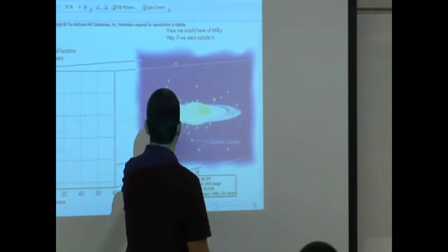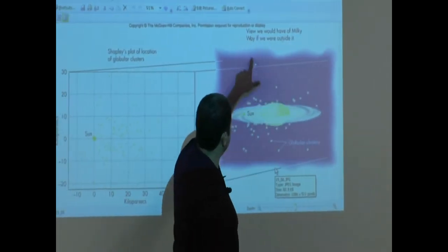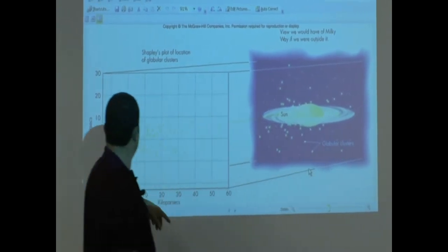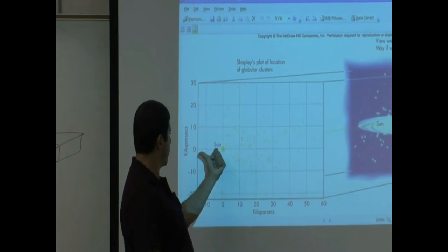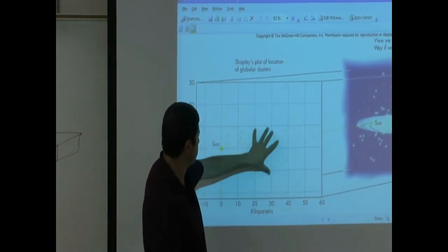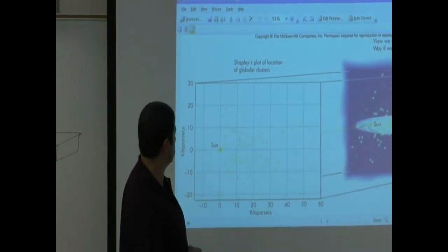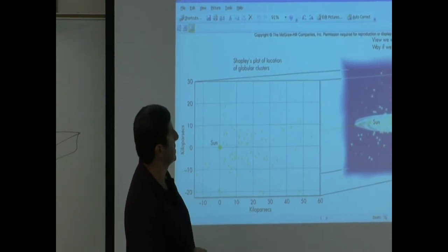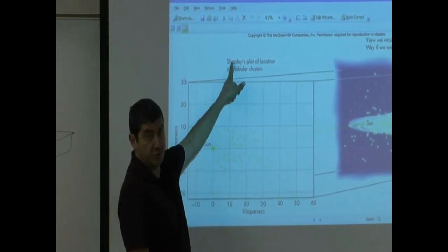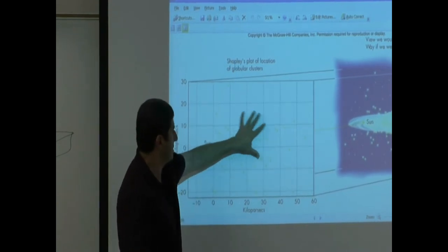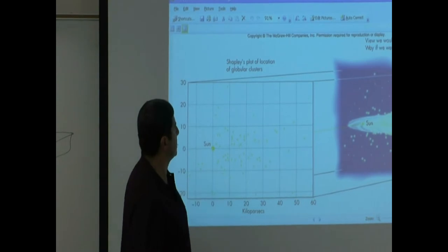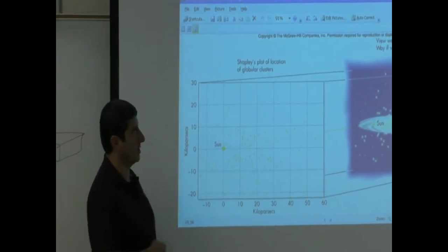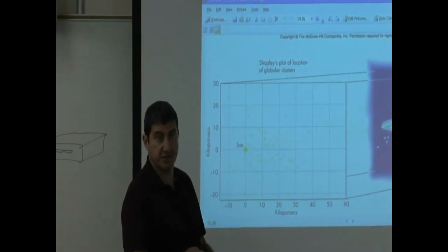Same here, see the sun, see how the globular clusters are distributed around the center. And now we know we're not at the center because we're off to the side, and the globular clusters are centered around that point. It was Harlow Shapley who figured this out when he did the estimate of their positions. We call it the Shapley plot of the location of globular clusters, and we owe to him our understanding of the Milky Way.